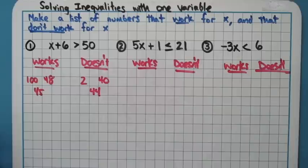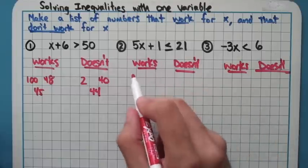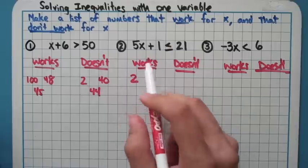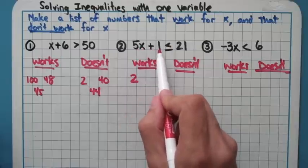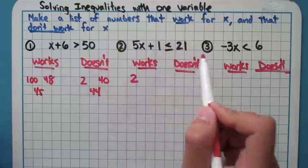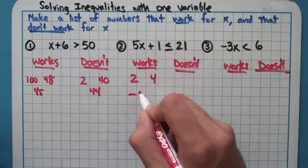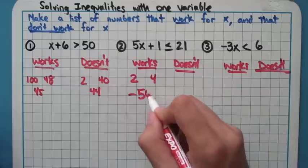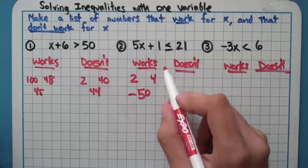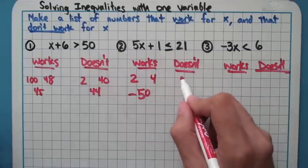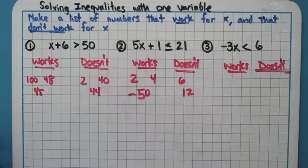You can do the same sort of thing on this one, just try plugging in different numbers. If you plug in, for example, a 2, 2 works because 5 × 2 = 10, plus 1 is 11, and 11 is less than or equal to 21. In this one, it's going to be numbers up till 4 that work. I can plug in negative 50, all these numbers would work. Numbers that wouldn't work would be numbers more than 4, like 6 or 12.